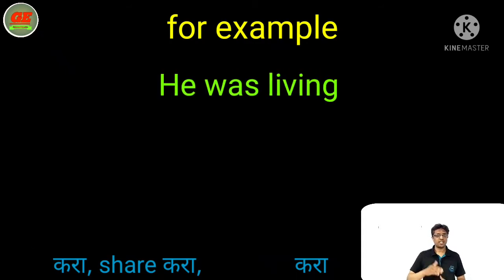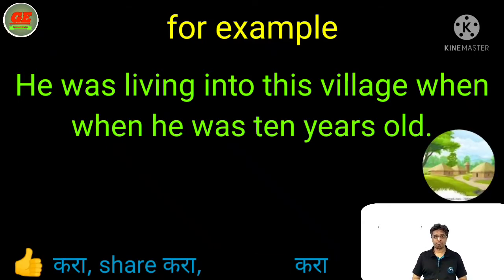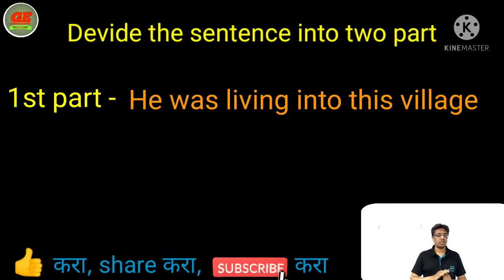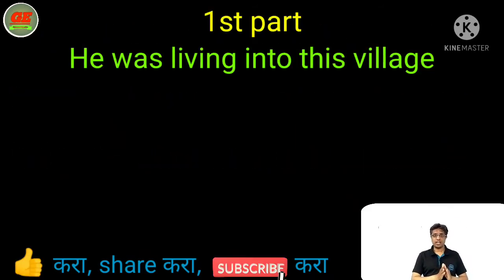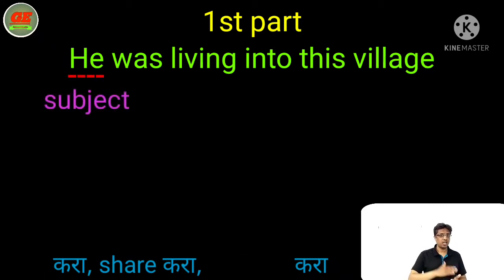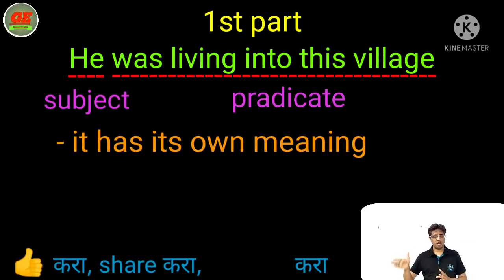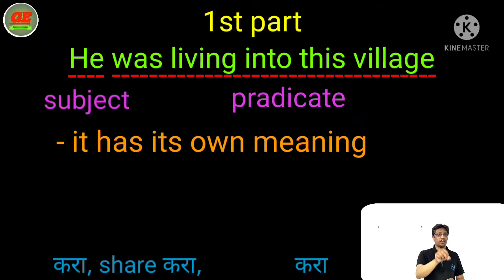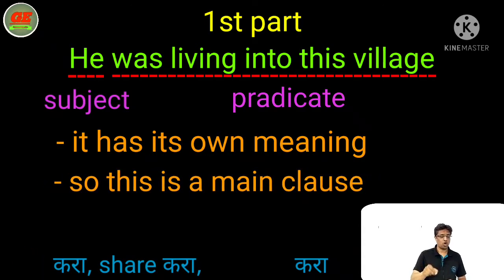For example: 'He was living in this village when he was 10 years old.' Focus on this sentence carefully. Divide it into two parts. First part: 'He was living in this village' — it has its own subject and predicate; 'he' is subject and 'was living in this village' is the predicate. It also has its own complete meaning. That's why this first part is known as a main clause.